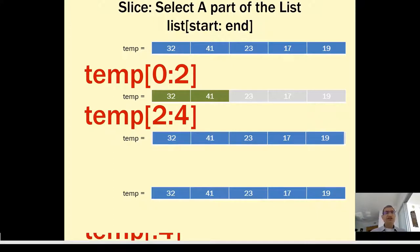2:4 means include 2, include 3, but not 4. So pick 23 and 17 but none of the others. That is temp[2:4].